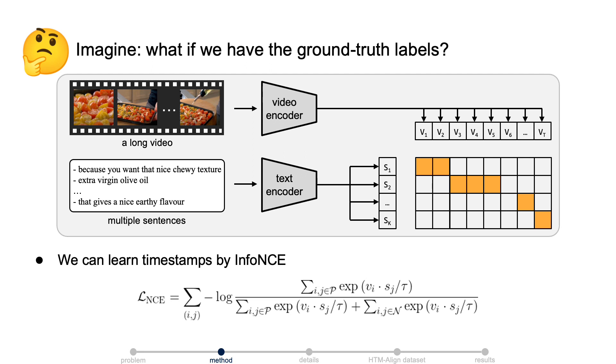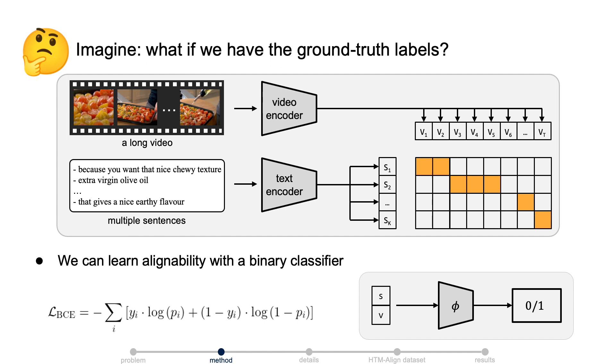If we have the ground truth corresponding timestamps for each text, we can train the model with an infoNCE loss. In detail, the corresponding visual-textual feature pairs are the positives and the other visual-textual feature pairs are the negatives. Furthermore, if we have the ground truth labels for the alignability, we can simply train a binary classifier with the ground truth labels.